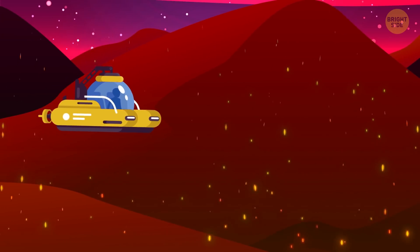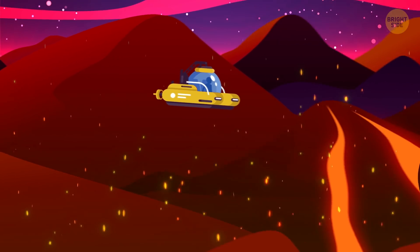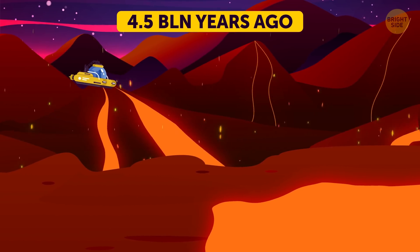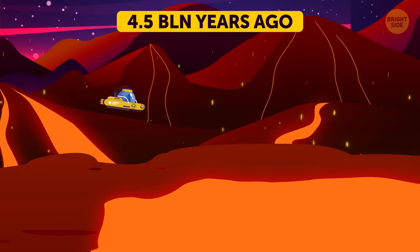This must be some sort of mistake. I booked a trip back in time, not to another planet. Oh, this is what the Earth looked like 4.5 billion years ago. So unrecognizable. It's super hot and molten all over.